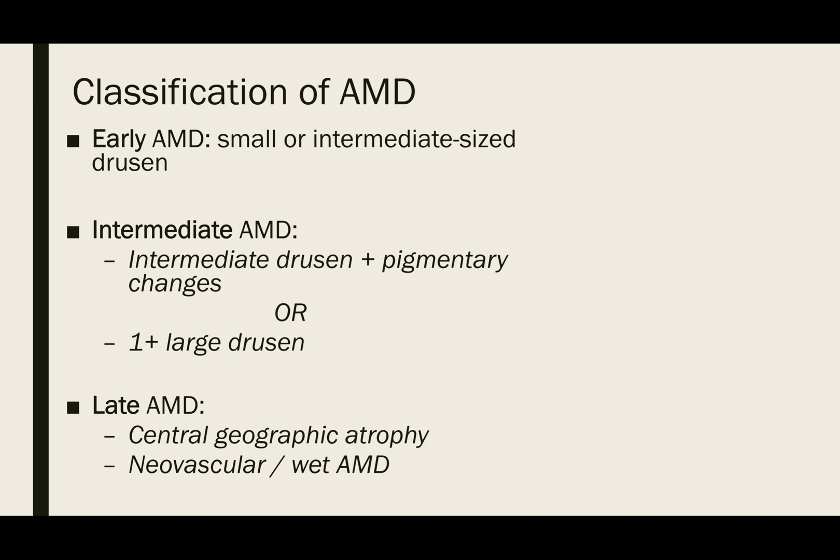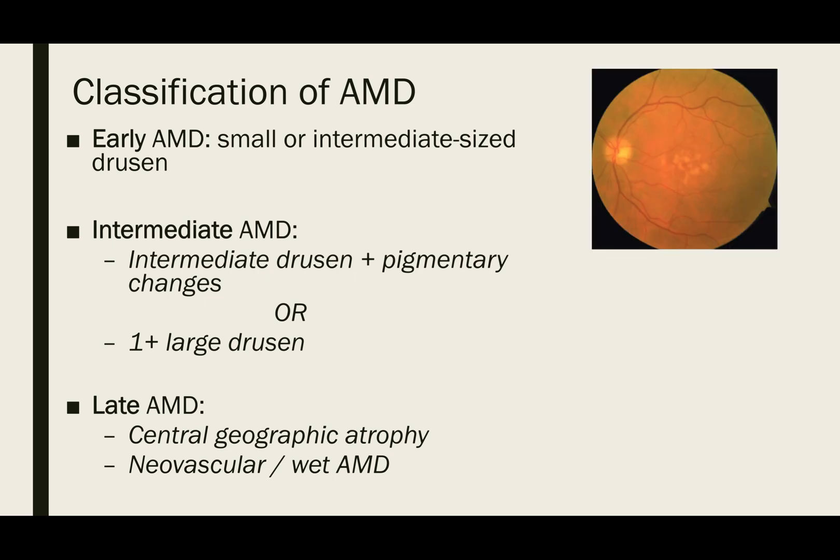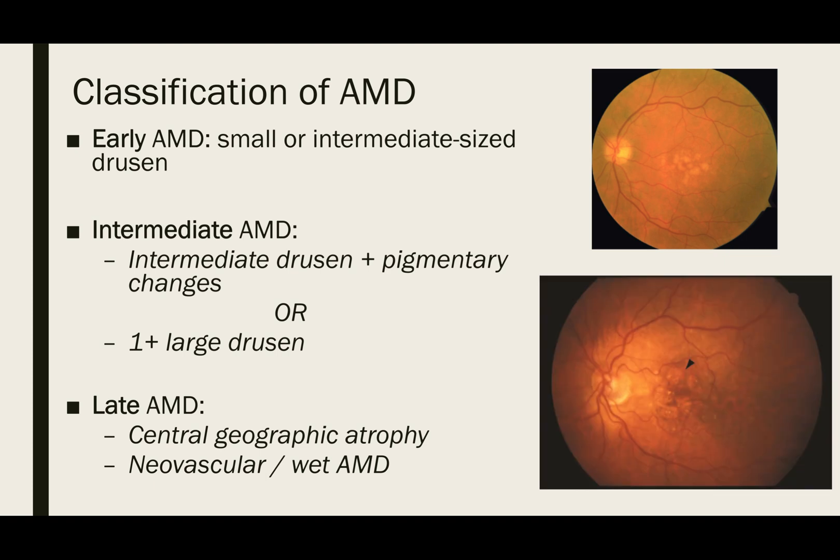Drusen are also used to help classify AMD. Early AMD is defined as when there are many small or medium-sized drusen and no pigmentary abnormalities on fundoscopic exam. In intermediate AMD, the drusen are medium-sized and there may be pigmentary abnormalities, or there may be a larger drusen. Late AMD is when there is significant atrophy of the macula and signs of wet AMD.